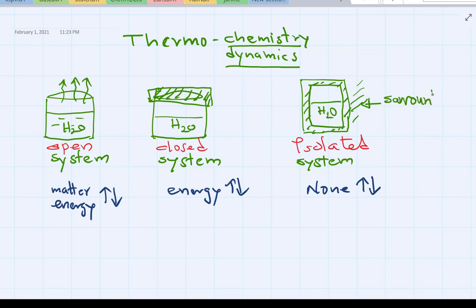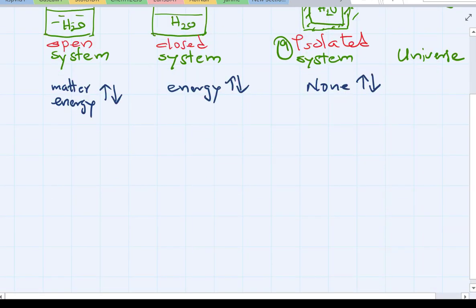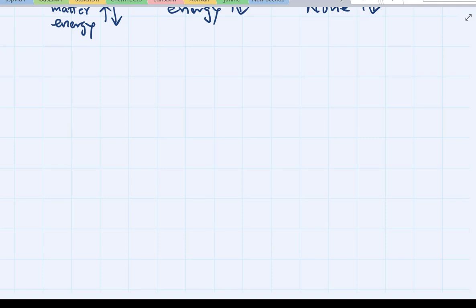Now this nearby area here is called surrounding. Now surrounding and system and all these things together we call the universe. So we will be talking about these three things when we talk about the exchange of energy, matter and other things.